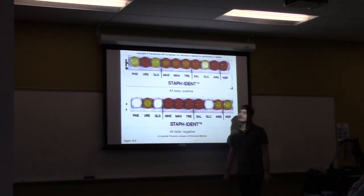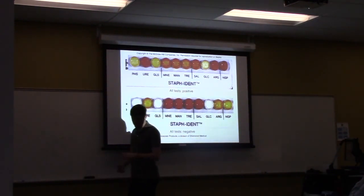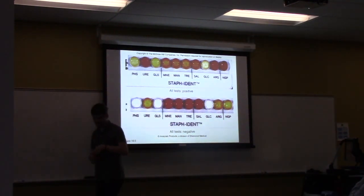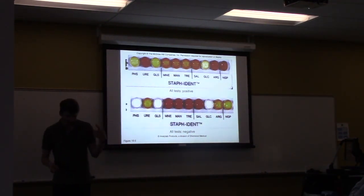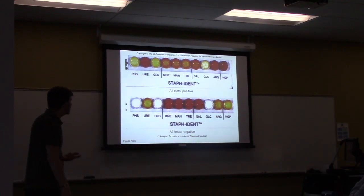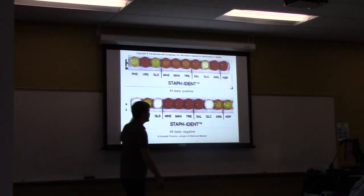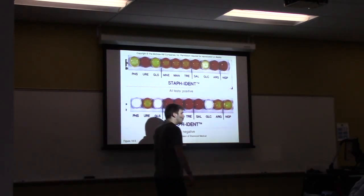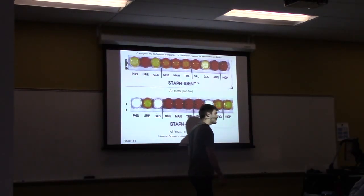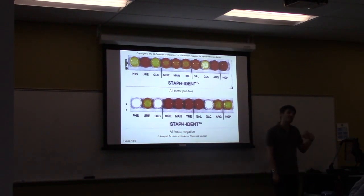We can test for staph organisms using a latex agglutination test or by looking for beta-hemolytic activity on a blood agar plate. There are also special API strips that tell you not only whether you have staph, but also how resistant it is and what virulence factors it contains.